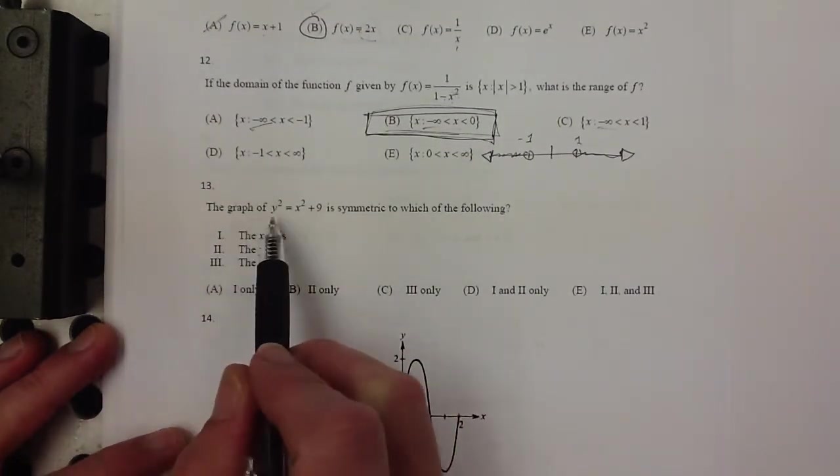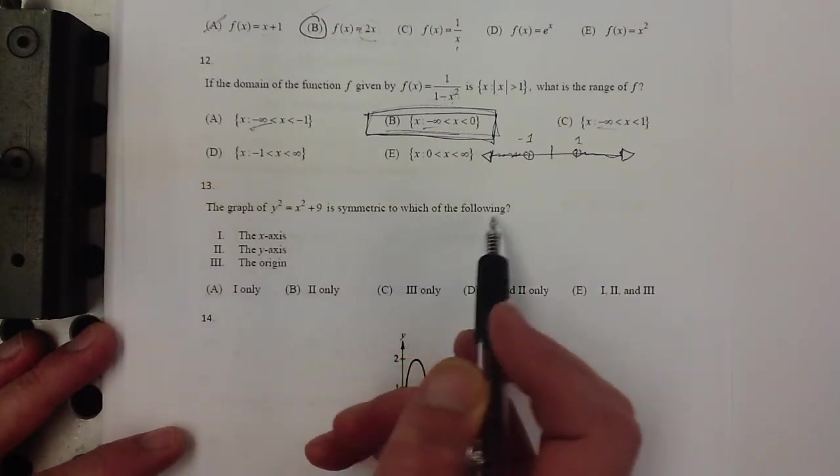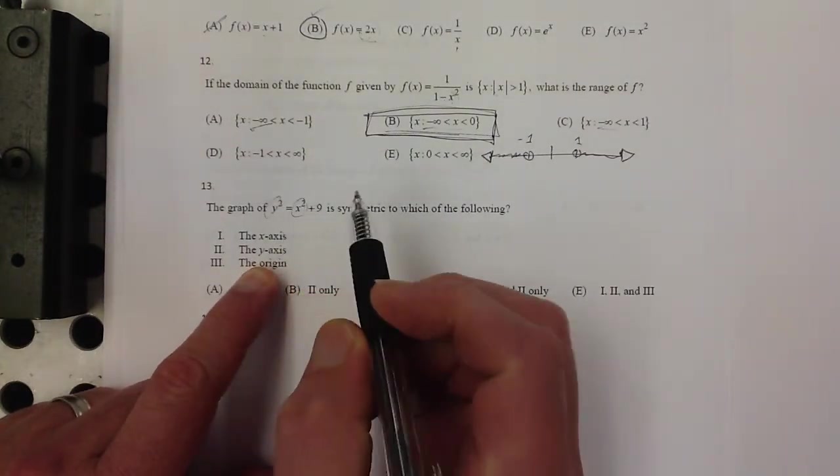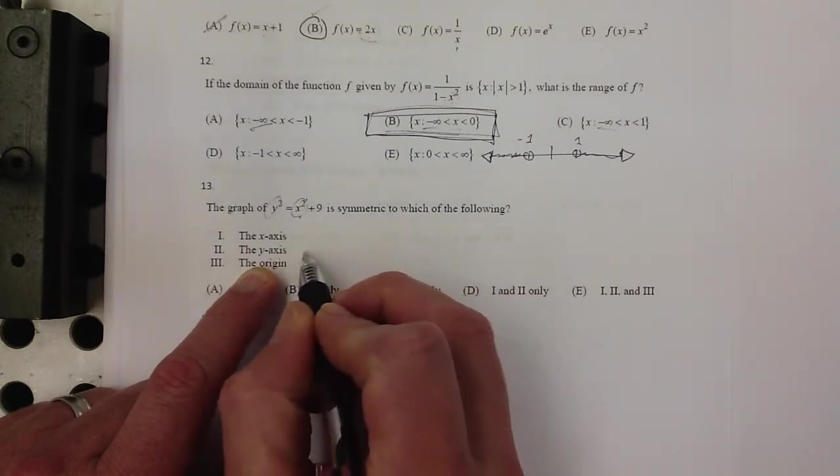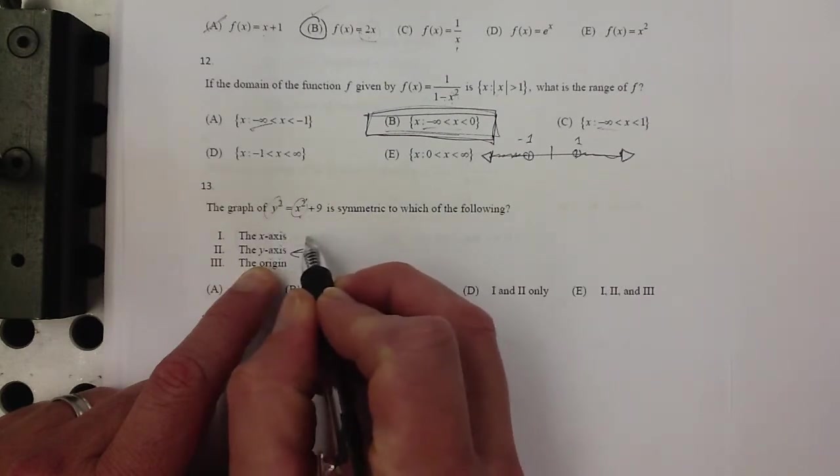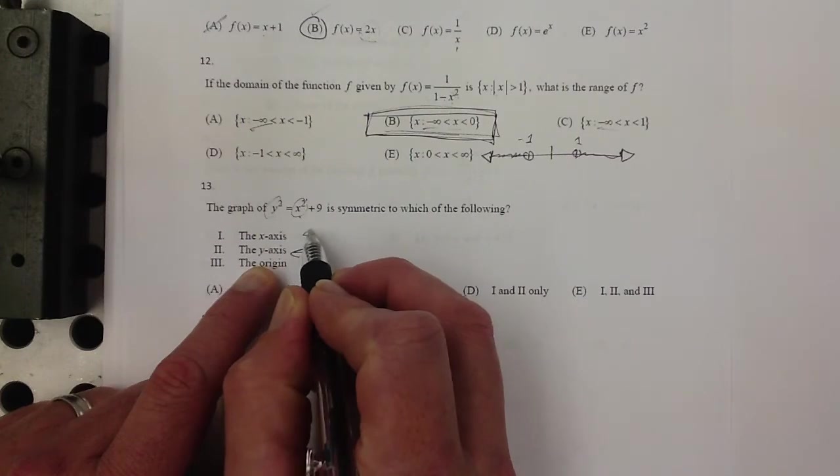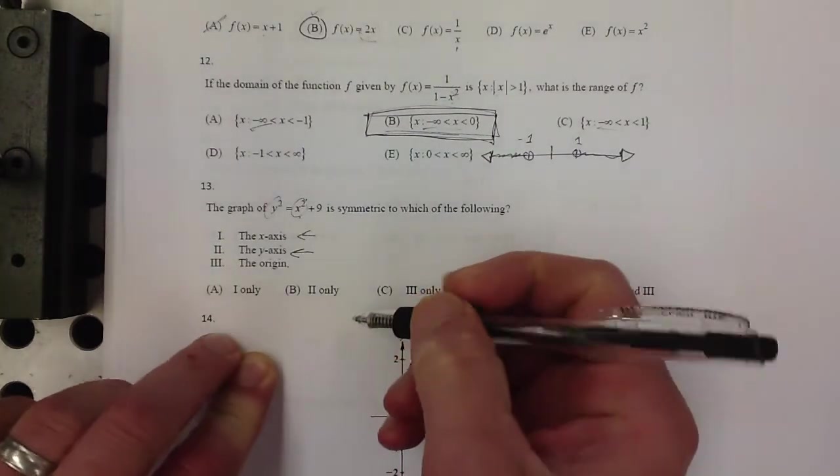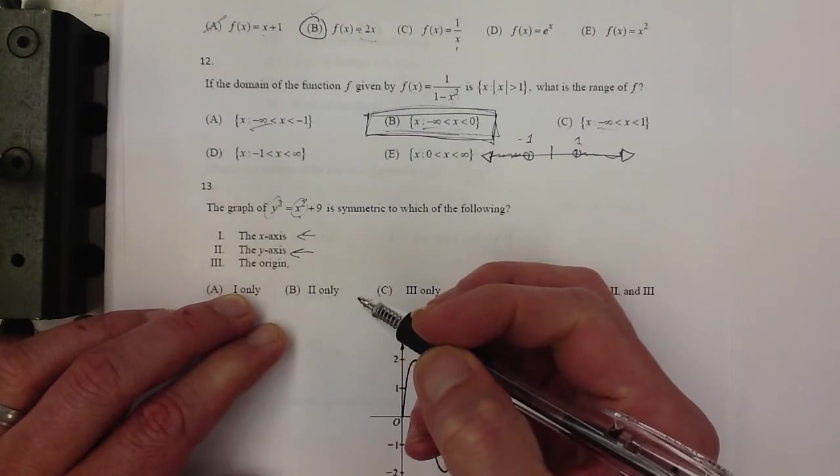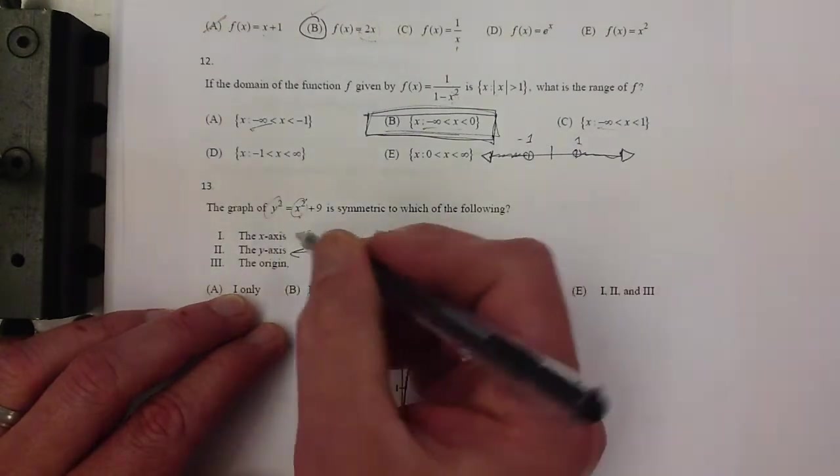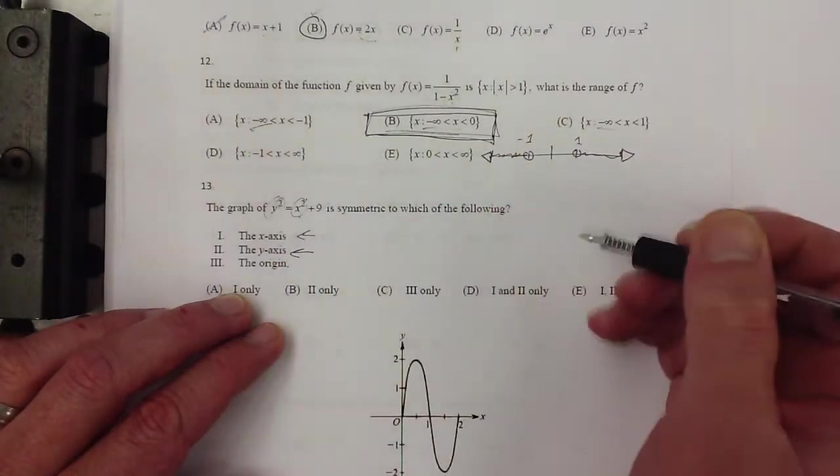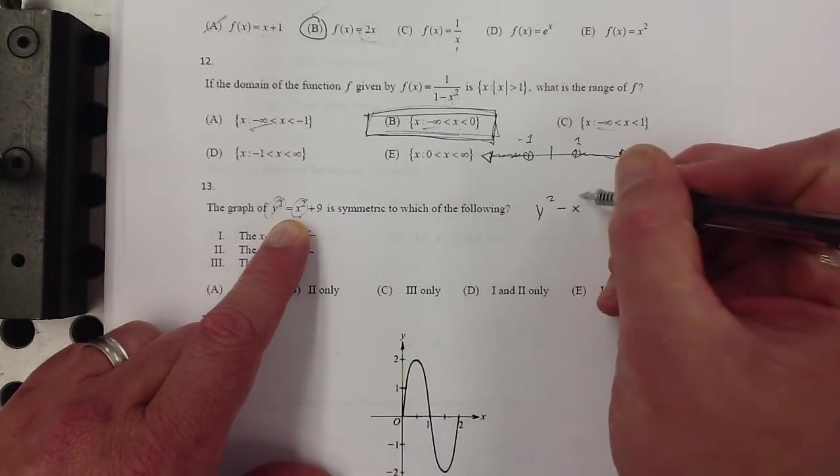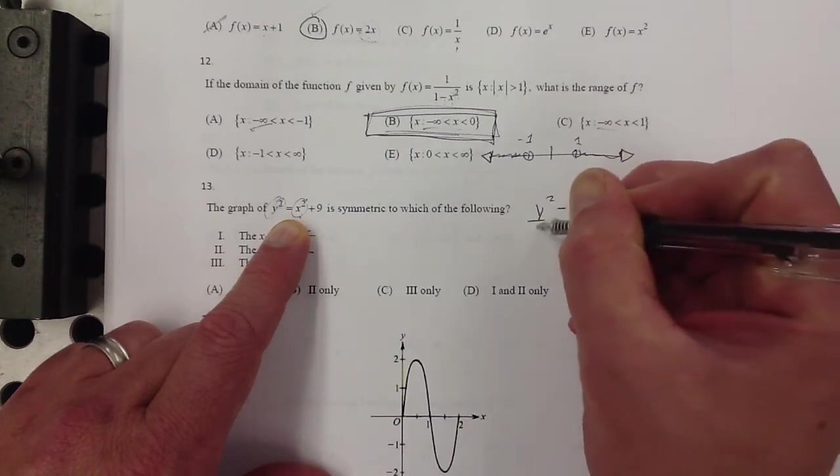Number 13, the graph of y^2 = x^2 + 9 is symmetric to which of the following? Well, the fact that the y is squared and the x is squared, the x being squared tells us that it has y-axis symmetry, and the y being squared tells us that it has x-axis symmetry. And symmetry about the origin, let's see, let's think about that. That would mean if it was also an odd function because both of those are being squared. Well, it's not a function, right? So because of the y squared.